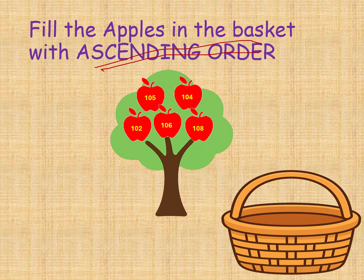Next, here we are taking an apple tree example. You should arrange in ascending order — small to large. The numbers are 100, 104, 102, 106, and 108. These are three-digit numbers, so we compare from the hundreds places. Here hundreds place is 1, 1, 1, 1, 1 — all ones. Since they are all the same, we can't determine the order yet.